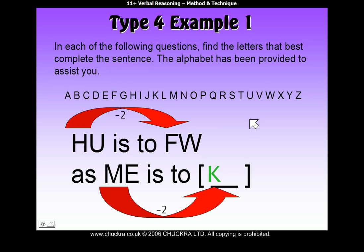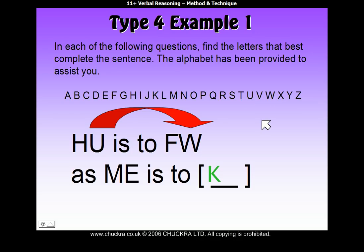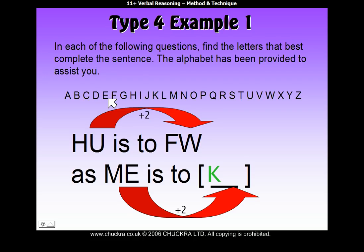To find the second letter of the answer, you look at the second letters of each pair and go from U to W. U goes forward 2 to get to W. So to find out what E becomes, you go forward 2 from E — 1, 2 — forward becomes G. So the answer is KG, and it's as easy as that.